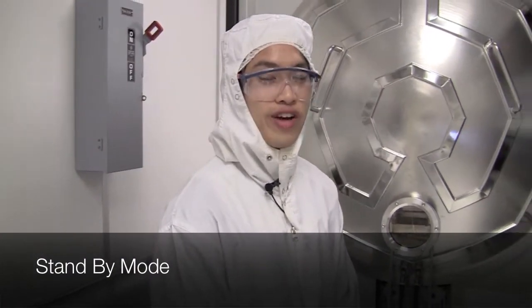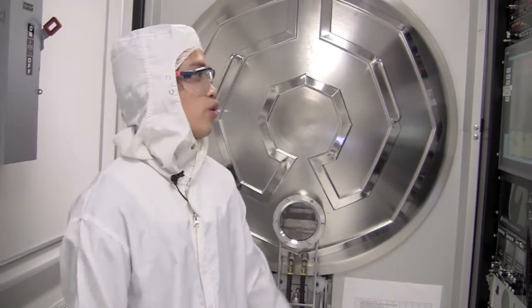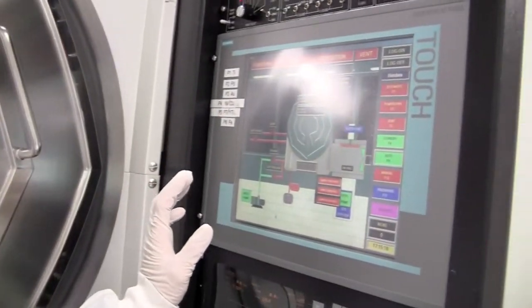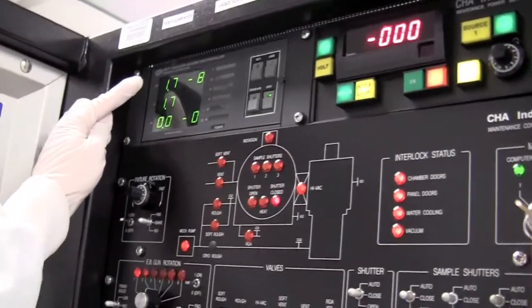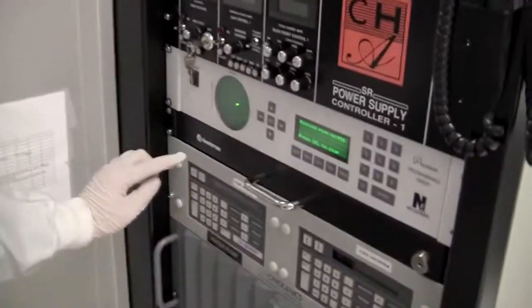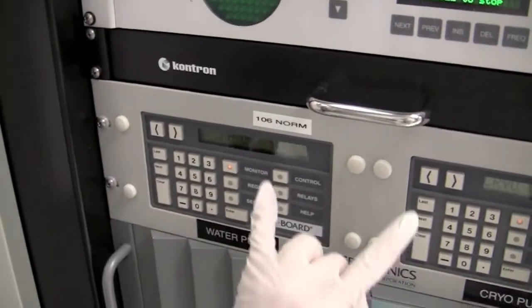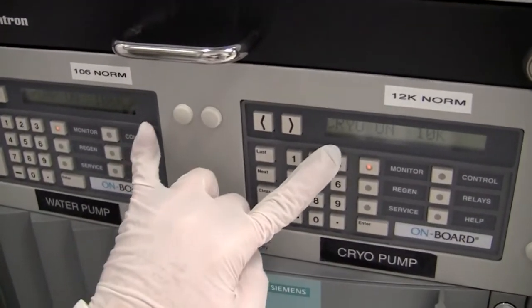Before we use the tool we want to verify that the tool is in standby mode and that no one is currently using the tool. To do this we will first look at the GUI to see that there's no active processing going on. We also want to verify that the pressure is below 10 to the minus 7 and that the cryo and water pump are to spec. We can verify these with the normal temperatures here and the current temperatures here.